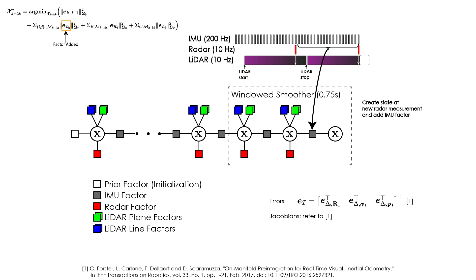First, IMU measurements are stored in a buffer on arrival for easy access. Then upon receiving a new radar point cloud measurement, a new state consisting of the IMU pose, linear velocity, and biases is created and connected to the graph using a preintegrated IMU factor.